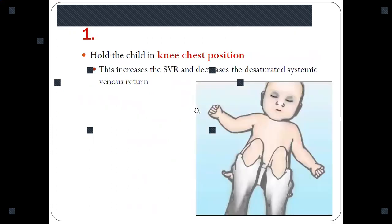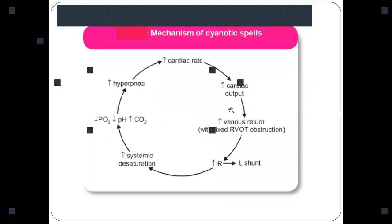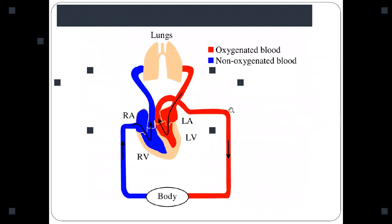The first thing is hold the child in knee-chest position. This knee-chest position will lead to increase in systemic vascular resistance. Because of the systemic vascular resistance increase, the pressure in the left ventricle will be high, and this increased left ventricle pressure will decrease the shunt from the right ventricle into the left ventricle, thus decreasing the hypoxia and decreasing the cyanotic spells.